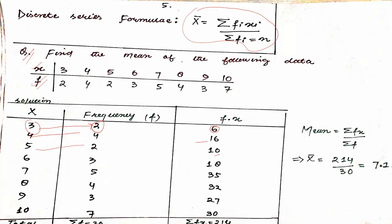Looking back at the formula, what have we said? The summation of f into xᵢ — you have to sum those. So f into x: 6 plus 16 plus 10 plus 18 plus 35 plus 32 plus 27 plus 30. The total sum of f into x is calculated.